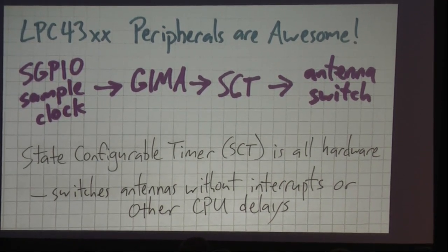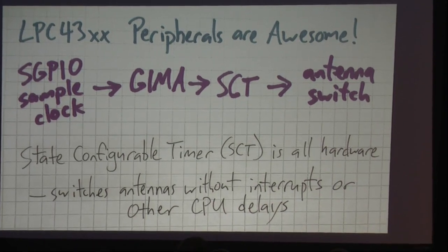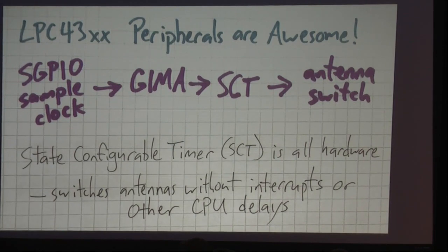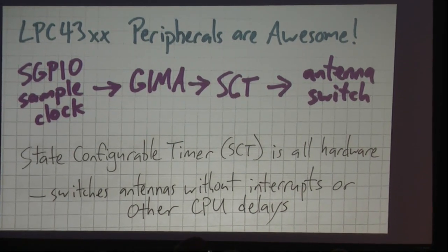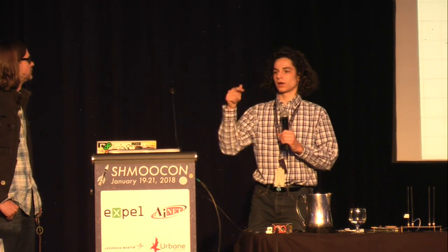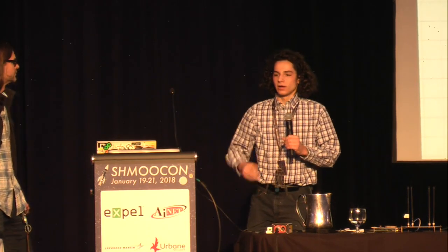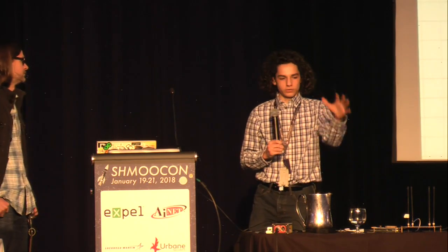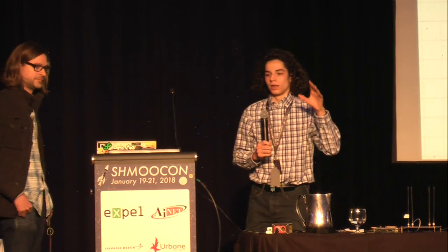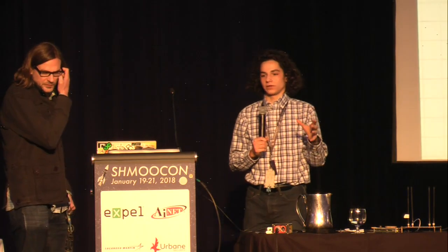It's important that the sample clock is where the switching timing is derived from, because that means we don't have to deal with a separate synchronization system, and we can always know how long each antenna will be selected for and when we're switching to the next one. It takes away a lot of complexity, and due to the architecture, it's actually really easy to do. The SC timer and everything else we're using are all hardware peripherals in the microcontroller — configured with software, but no software is responsible for doing the switching, so there's no interrupt latency or CPU problems.